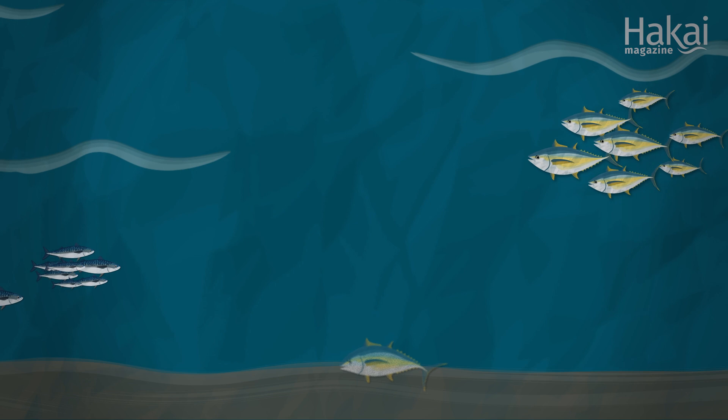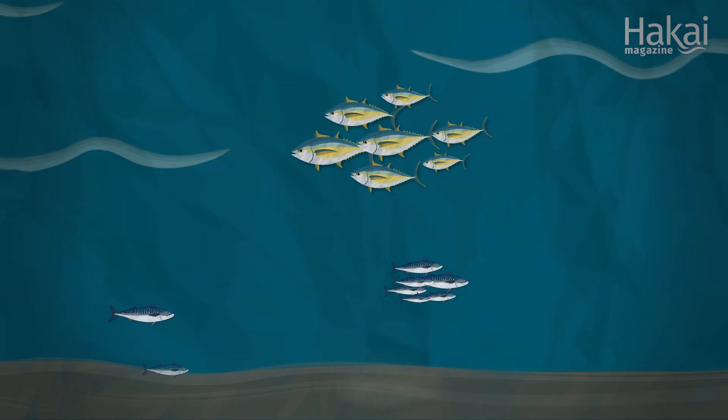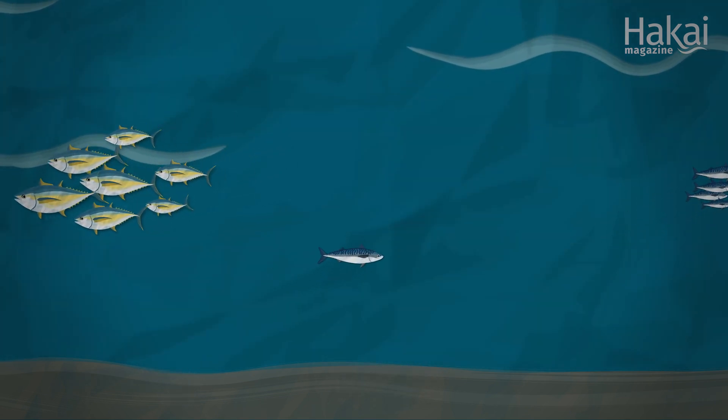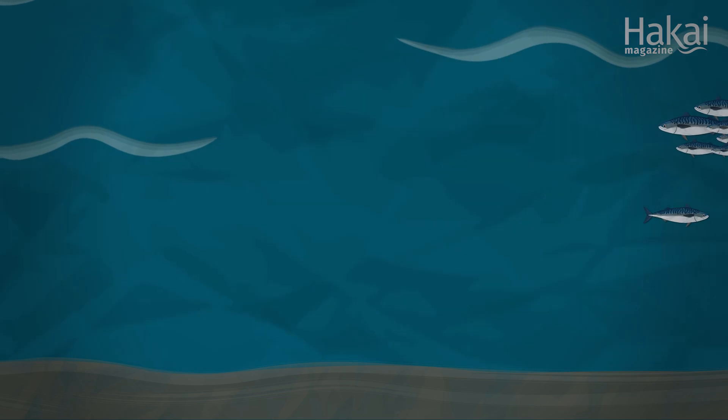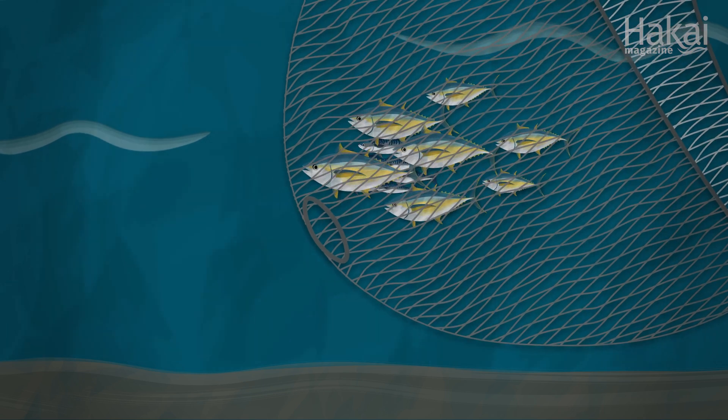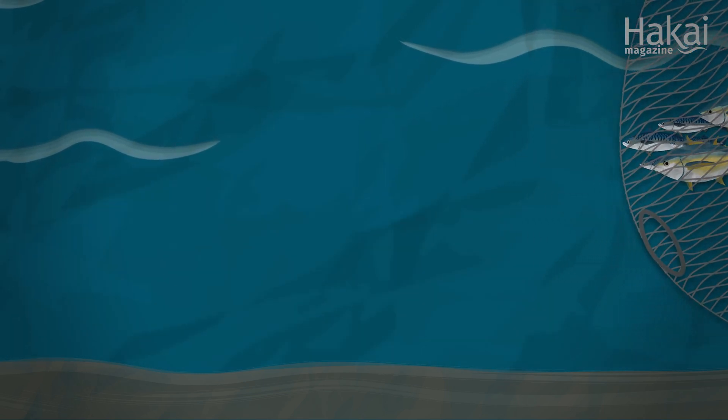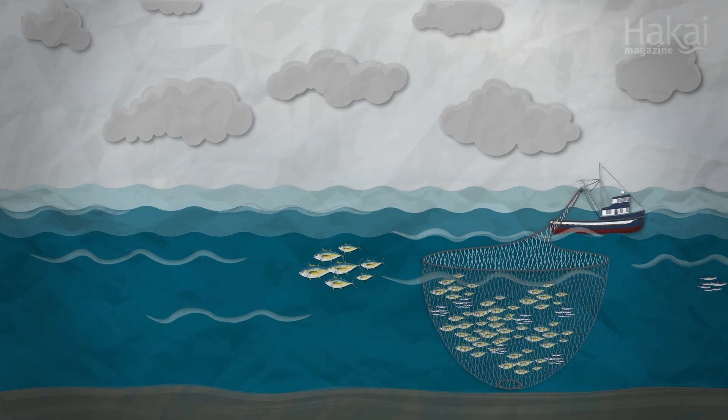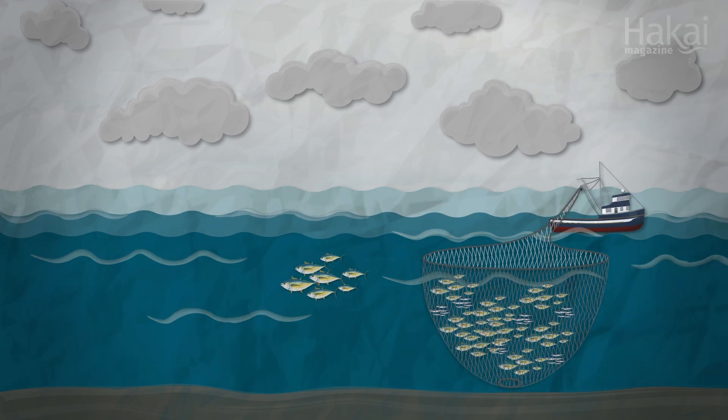But fish fall too. Gael Mariani, a PhD candidate at the University of Montpellier in France, wondered how much carbon was sequestered by fish fall and if our human appetite for big fish like tuna was depriving the ocean of this carbon and sending it into the atmosphere instead. So Mariani crunched the numbers and he found that since 1950,